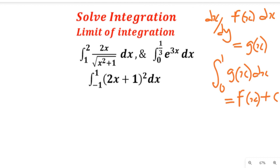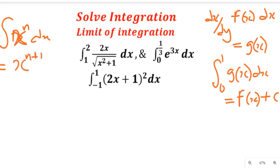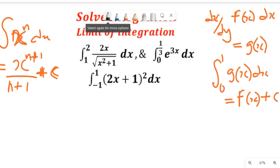Also remember the general formula for integration: if you are integrating x to the power of n with respect to x, applying the laws of integration you're going to add one to the power in the numerator and divide by n plus one, plus a constant. That is, the integral of x^n dx equals x^(n+1) divided by (n+1) plus C. Remember this point as we'll be making use of it in the video today.